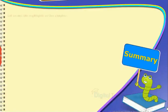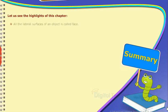Summary: Let us see the highlights of this chapter. All the lateral surfaces of the wooden box are called face. The joining of two faces is called an edge.